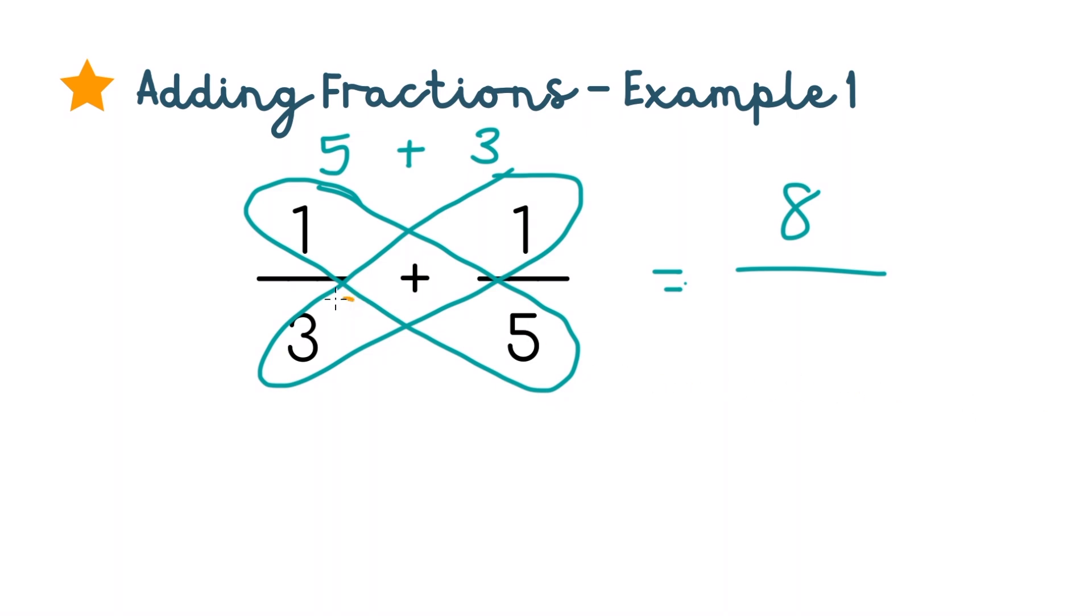Then we're going to multiply the bottom numbers, so 3 times 5 equals 15, and we'll put that in the denominator. That is our answer, super easy.